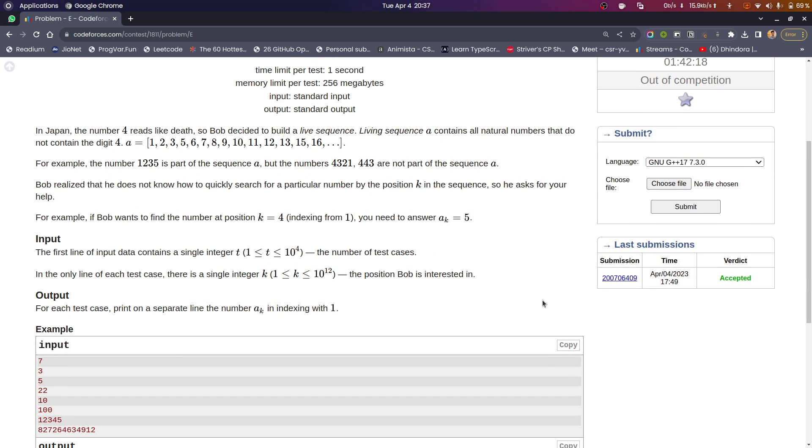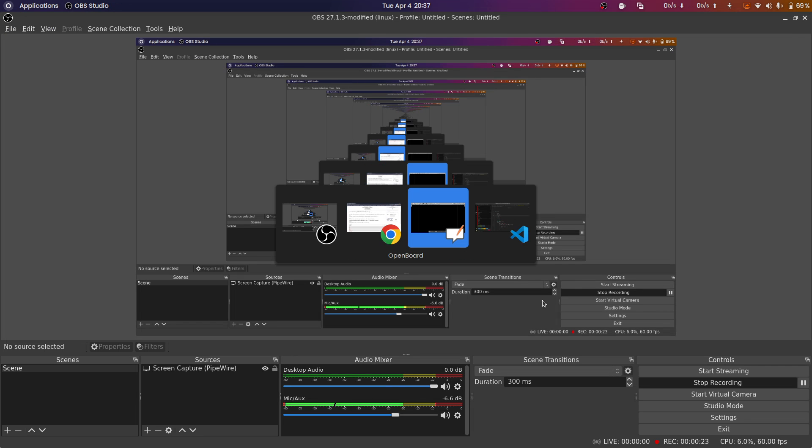The problem statement is given like this: there is a number system where the digit 4 is missing, and you have to tell me what is the kth digit in that number system. So basically the number system is something like this: 1, 2, 3, then 4 is missing, 5, 6, 7, 8, 9, 10, 11, 12, 13, then 14 will be missing because 4 is present here, then it will directly go to 15.